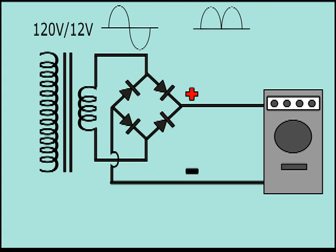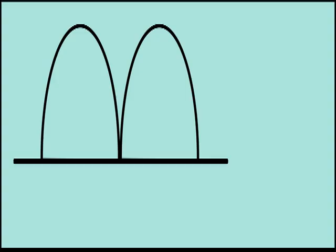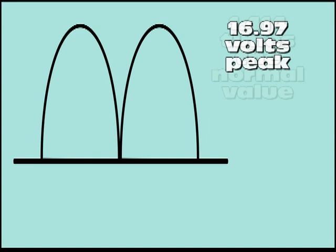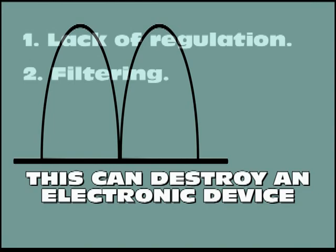For using with more delicate equipment, other factors must be taken into consideration. First, the lack of regulation. Since the rectification process produces two pulses for each cycle, 120 pulses are produced in one second. At the peak of each pulse, the voltage reaches a value of 1.414 times the normal value. That is, an effective voltage of 12 volts reaches 16.97 volts at the highest point of each pulse. A delicate electronic device can be destroyed or at least overheated under such circumstances.